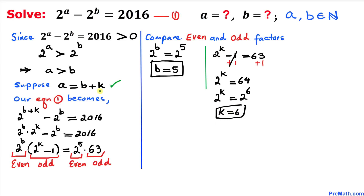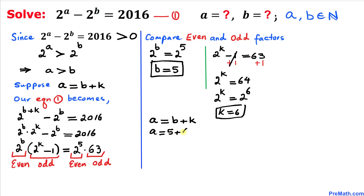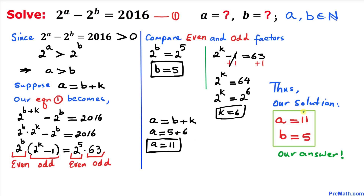Since a equals b plus k, substituting b equals 5 and k equals 6 gives a equals 5 plus 6, so a equals 11. Thus our solution is a equals 11 and b equals 5, which are indeed natural numbers. Thanks for watching and please don't forget to subscribe to my channel for more exciting videos.